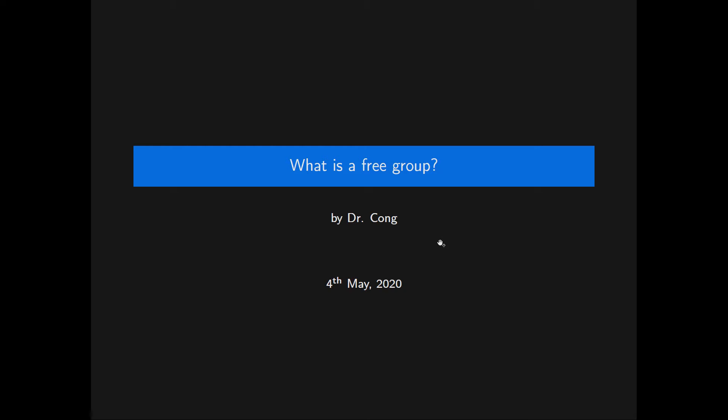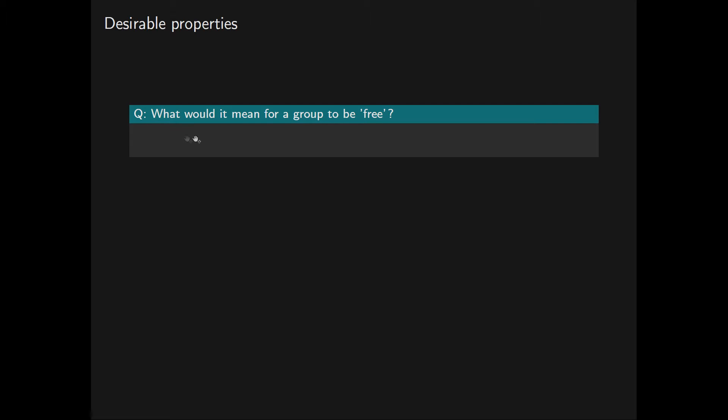In this video we will attempt to answer the question: what is a free group? To start with, what would it mean for a group to be free? The idea is that a group F would be free if it satisfied no other conditions than the group axioms. So F is kind of a minimally constrained group.